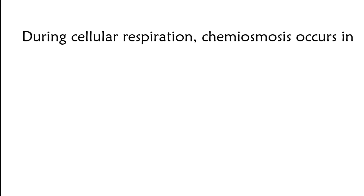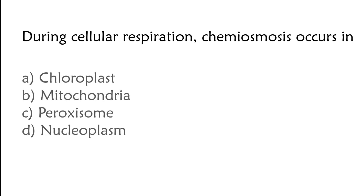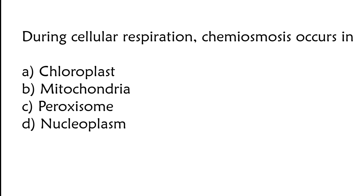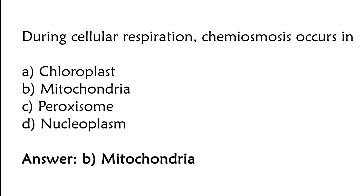During cellular respiration, chemiosmosis occurs in: chloroplast, mitochondria, peroxisome, or nucleoplasm. The correct answer is option B — mitochondria.